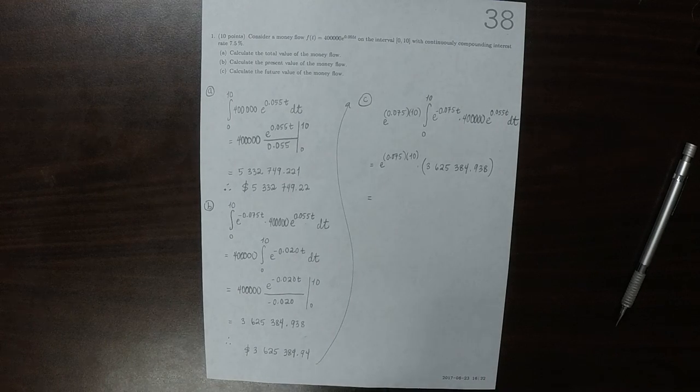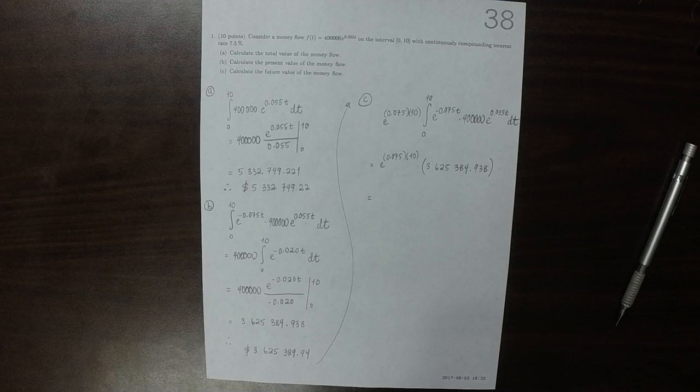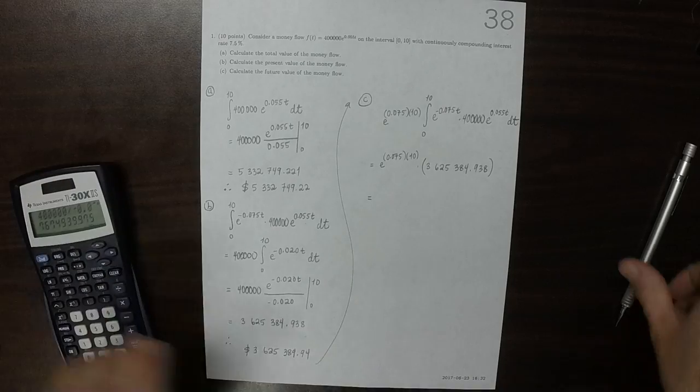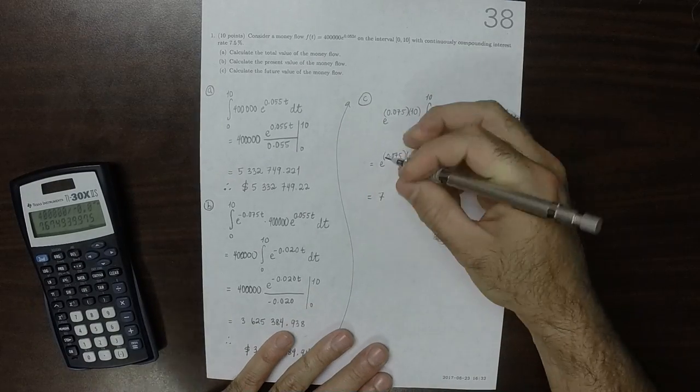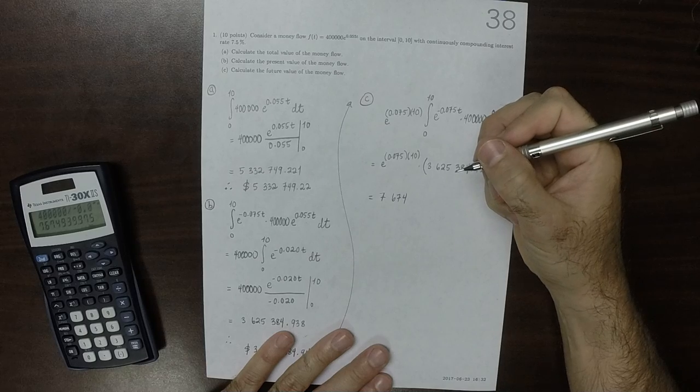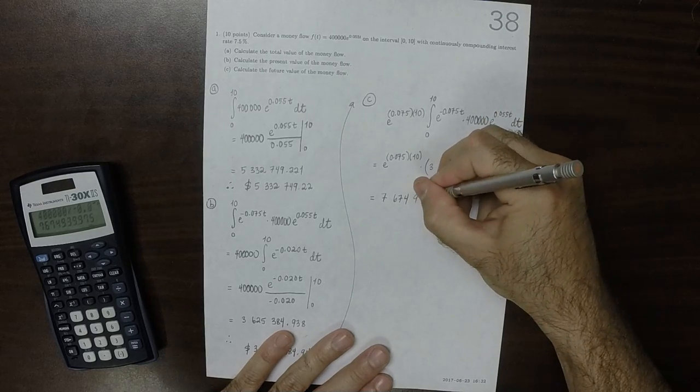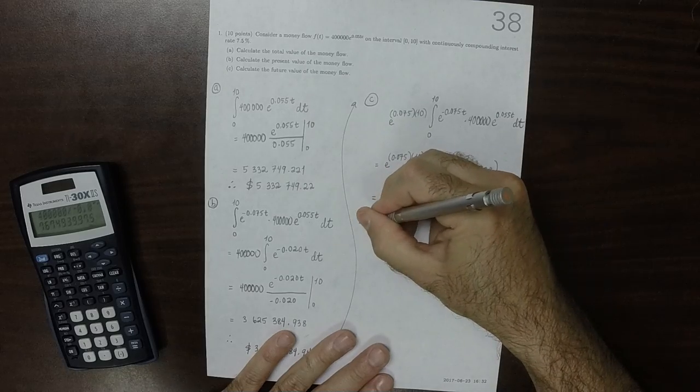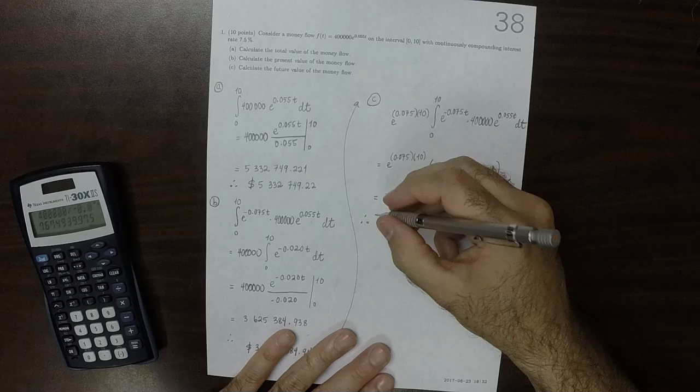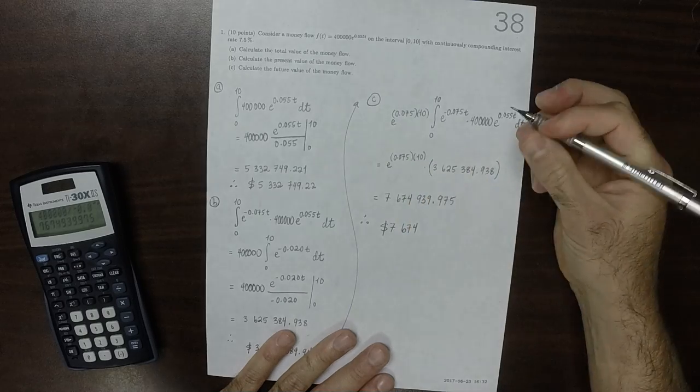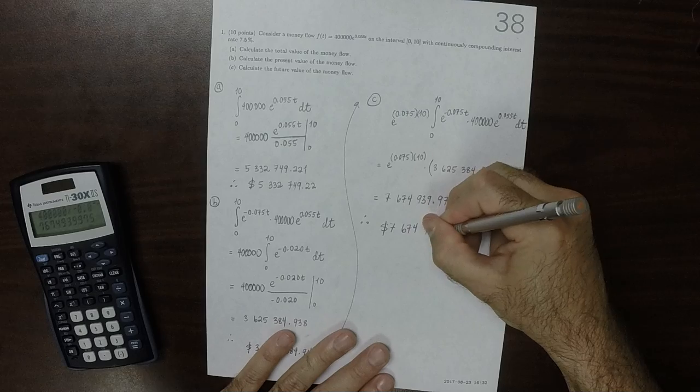So, plugging all of that in, exponential 0.075 times 10 times all that stuff, yields 7,674,939.98, and therefore, rounded to the nearest cent, that would be $7,674,939.98.